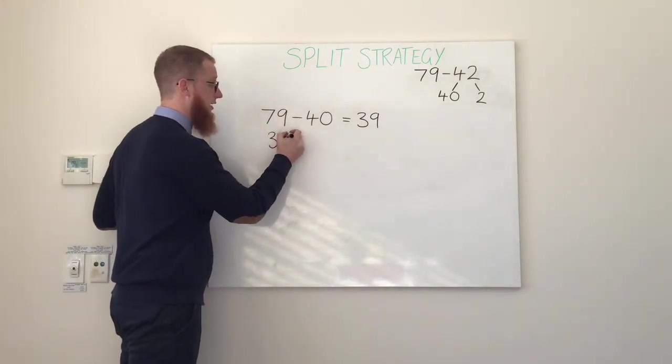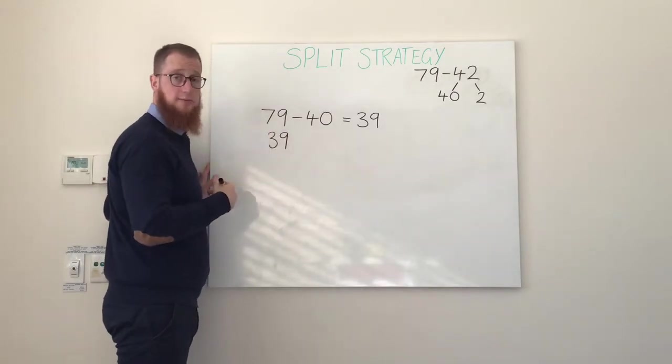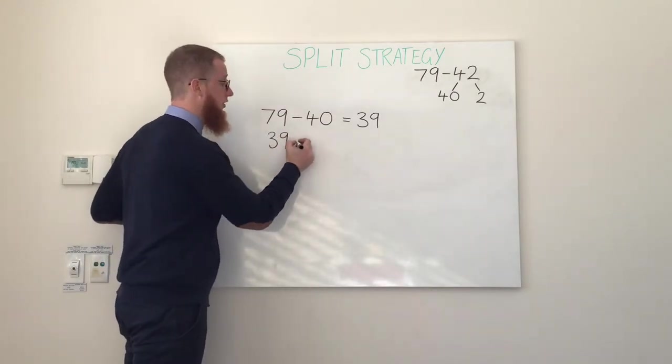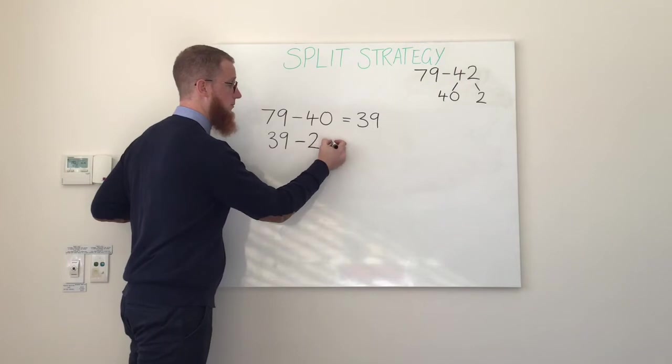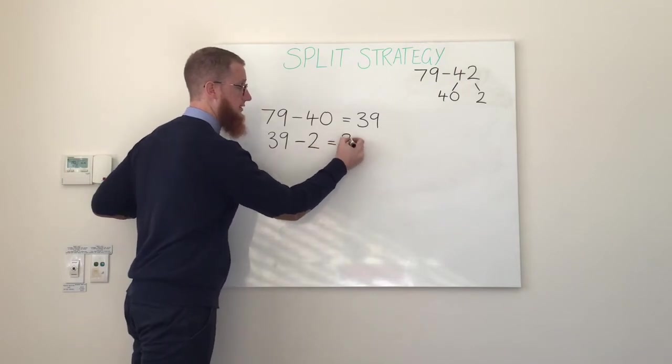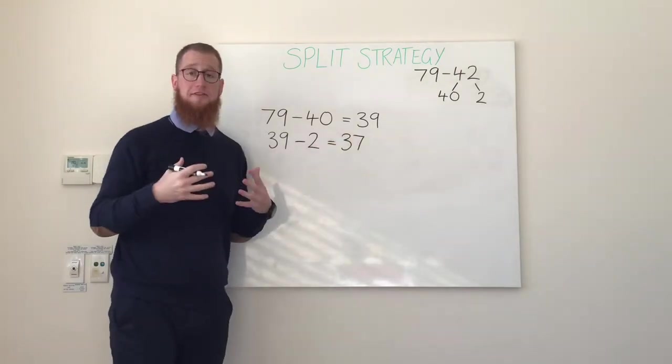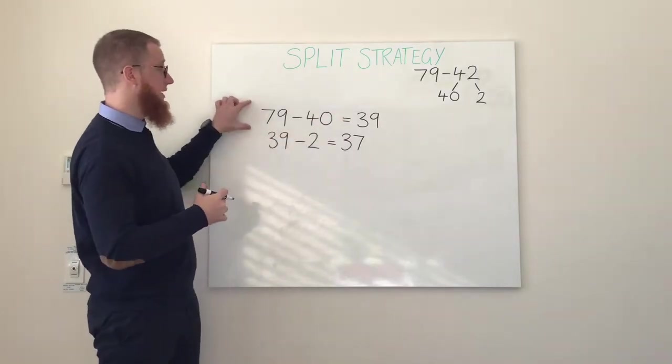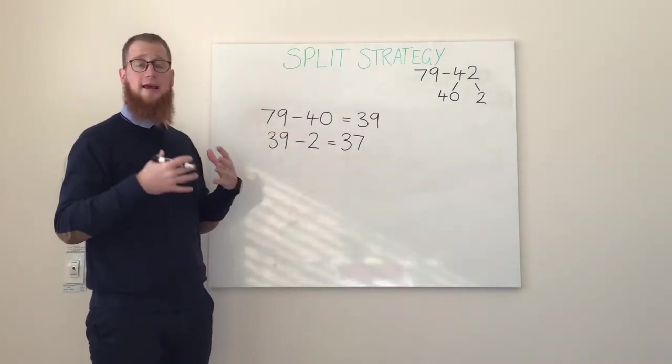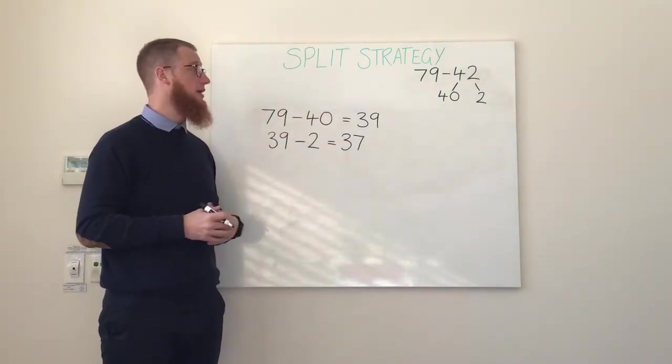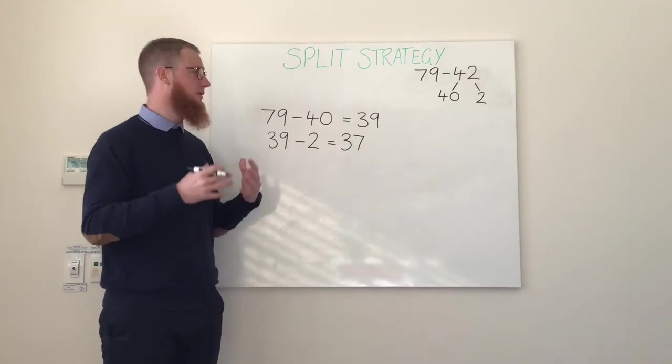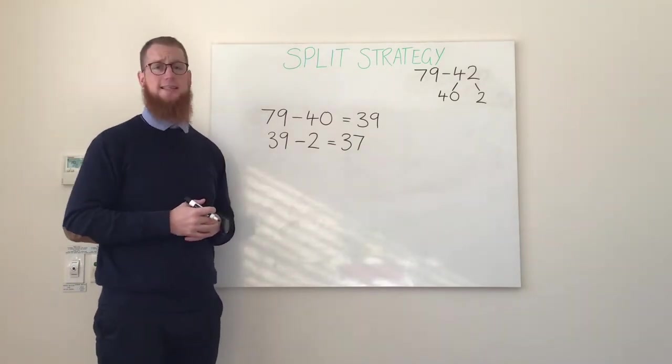We now take away our next smallest place value part which is our 1s. 39 minus 2 is 37. We have now taken away our 4 lots of 10 and our 2 lots of 1. Therefore we have completed our equation of 79 minus 42 and we can say that our answer is 37.